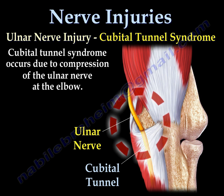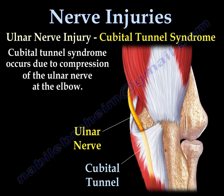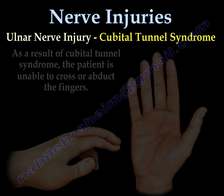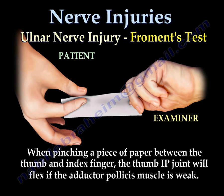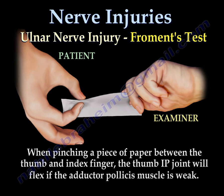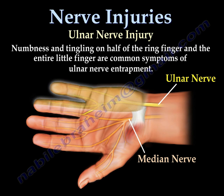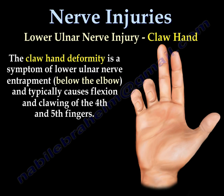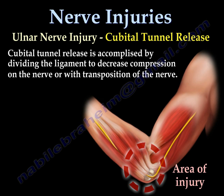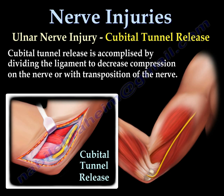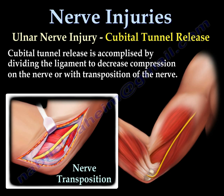Ulnar nerve injury usually occurs in cubital tunnel syndrome. The patient cannot cross or abduct the fingers. Froment's test is usually positive. There is also numbness of the little finger. A claw hand will occur in low ulnar nerve palsy. Cubital tunnel syndrome is usually treated by ulnar nerve release or transposition.